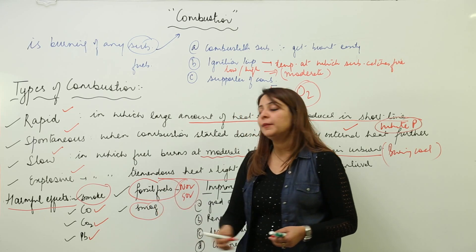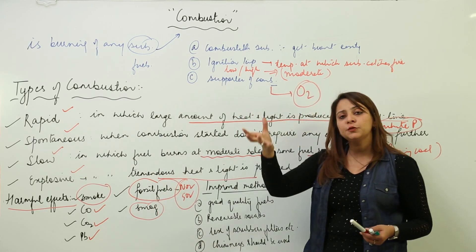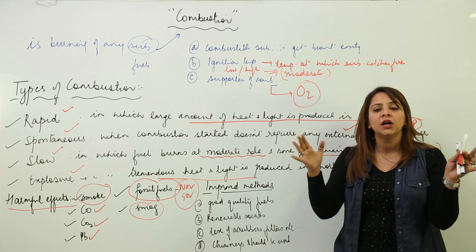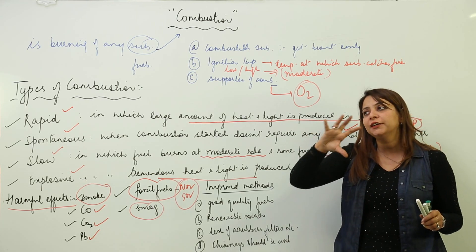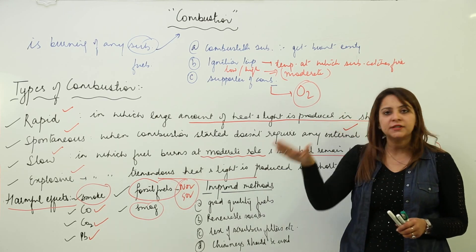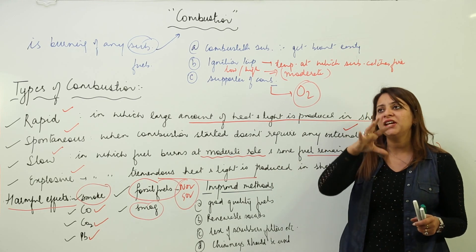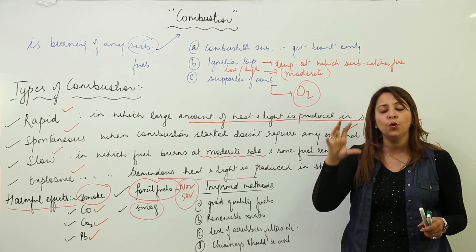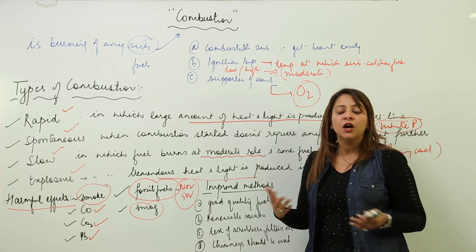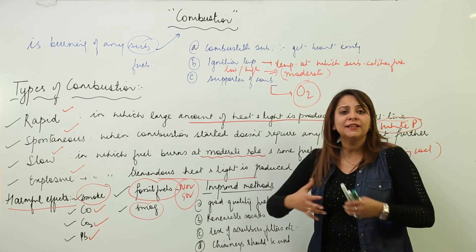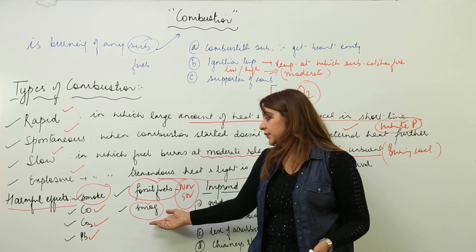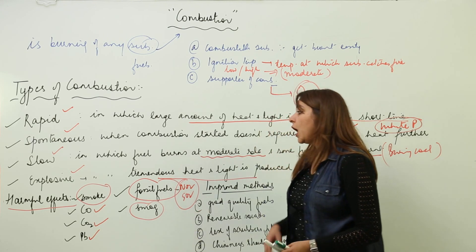When a lot of combustion is carried out, smoke in the atmosphere combines with fog to form smog. In metro cities, smog makes the sky unclear — something is always in the air. Smog reduces visibility, making it hard to see objects, and makes the environment feel unclean. This is another harmful effect of combustion.